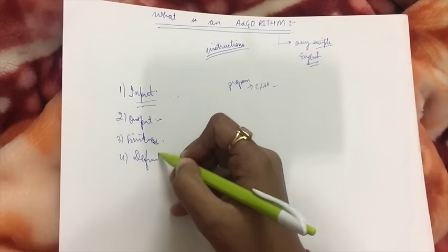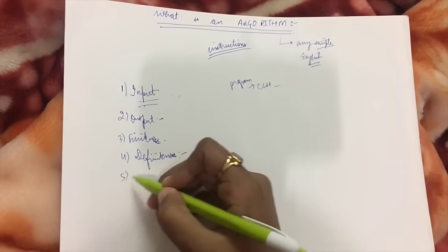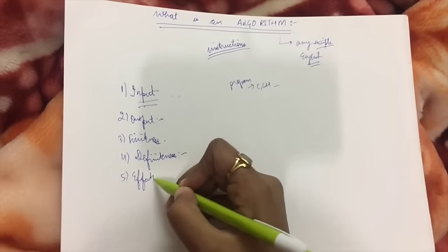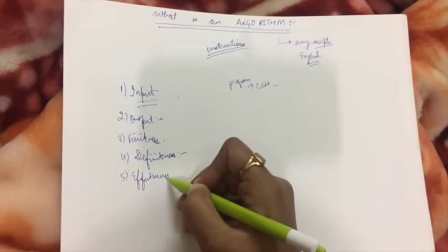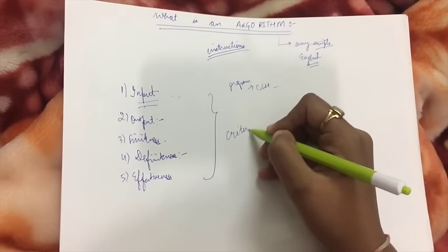Fourth is definiteness. Definiteness means that it must be clear and unambiguous - every statement in an algorithm must not give two meanings. One statement should mean only one thing. And the fifth criteria is effectiveness. These are the criteria that have to be followed by an algorithm.